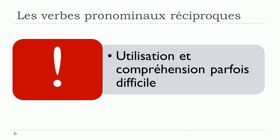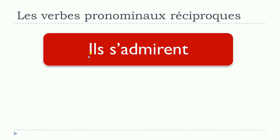Be careful, because in some cases it will be difficult to really understand. So utilisation et compréhension parfois difficiles. I'll give you a good example: you've got ils s'admirent. S'admirer means to admire. So with the plural form and the pronominal verb, you might think it's un verbe pronominal réciproque in this example.